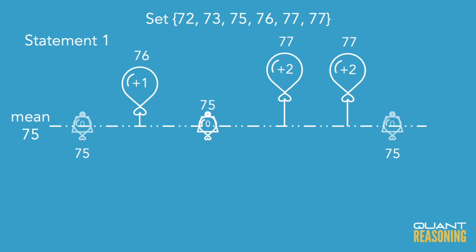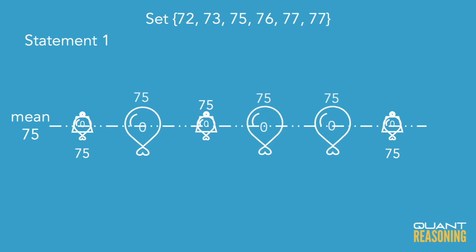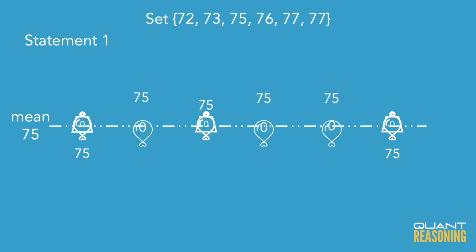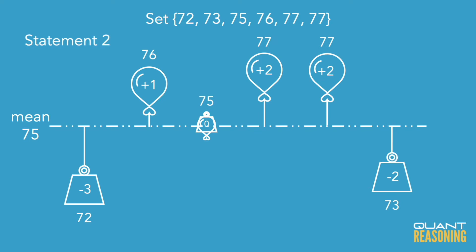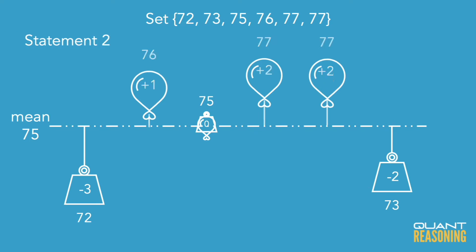It wouldn't make sense — the deviations above and below wouldn't cancel out if you only have deviations on one side of the average. The same thing applies to Statement 2: it says that none of the numbers are above the average.